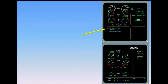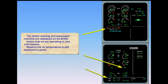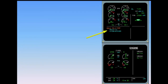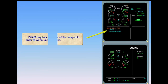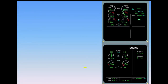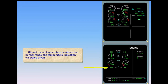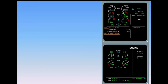The amber warning and associated checklist are displayed on the engine warning display. We are operating in very cold weather — observe that the oil temperature is still displayed in green. ECAM requires that takeoff be delayed in order to warm up the engine. Should the oil temperature be above the normal range, the temperature indication will pulse green. If the oil temperature continues to increase, an ECAM caution is activated above 165 degrees Celsius and the oil temperature indication becomes amber.